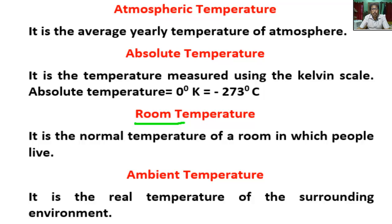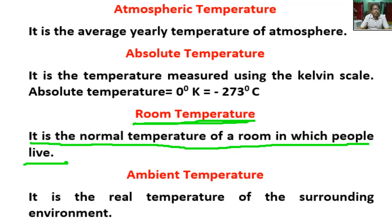What is room temperature? It is the normal temperature of a room in which people live — the temperature that is normal inside a building. Room temperature is a comfortable temperature that is not very hot or very cold, usually considered as 20 to 25 degrees centigrade.